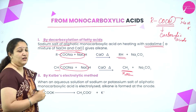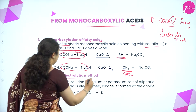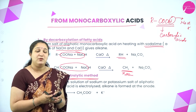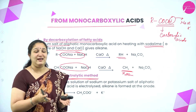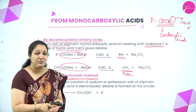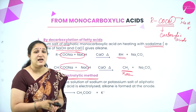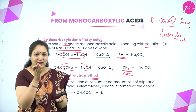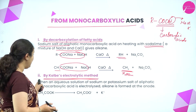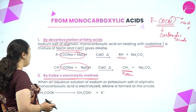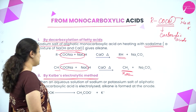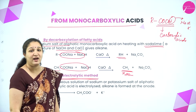Next is Kolbe's electrolytic method. Electrolysis means passing electric current through a solution, causing a chemical reaction. When an aqueous solution of sodium salt of aliphatic monocarboxylic acid is electrolyzed, alkane is formed at the anode.